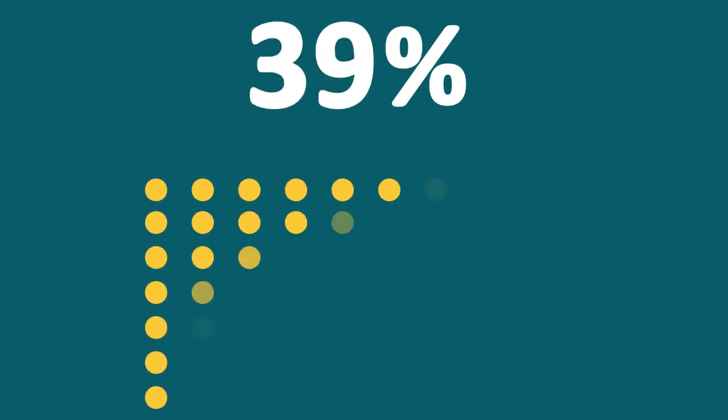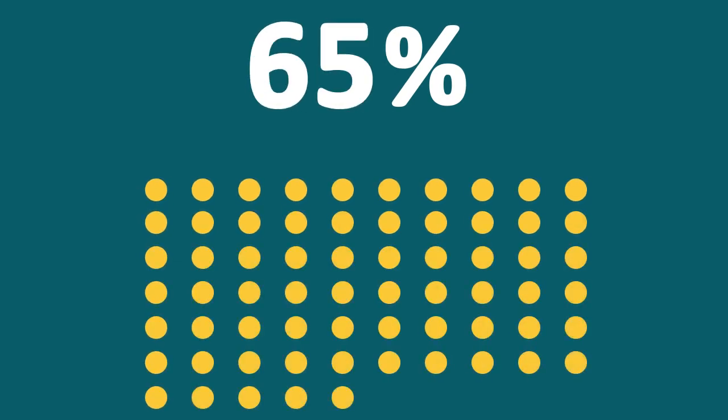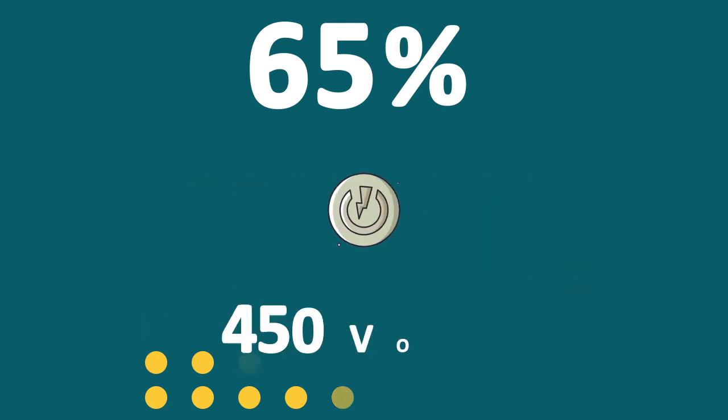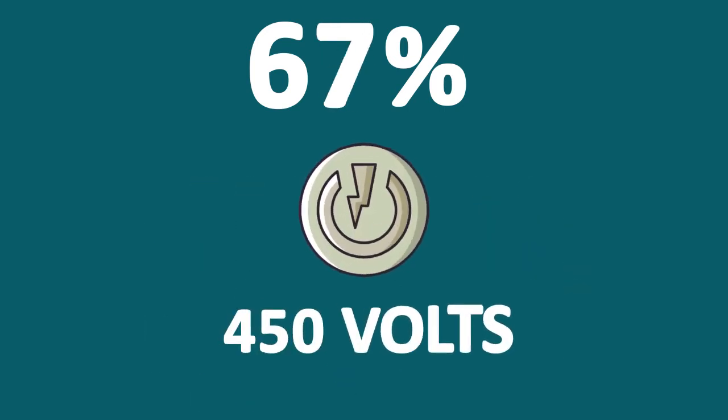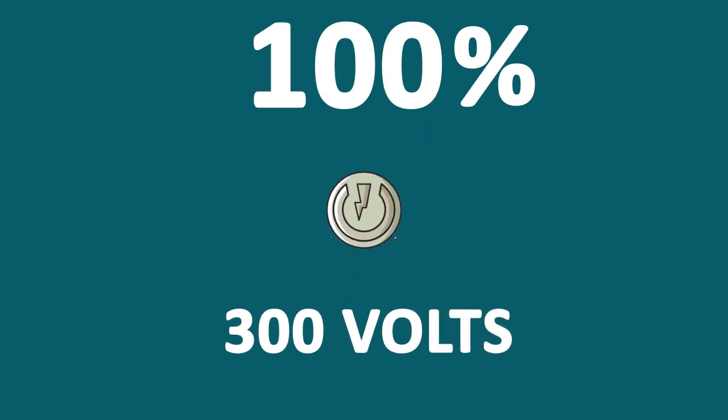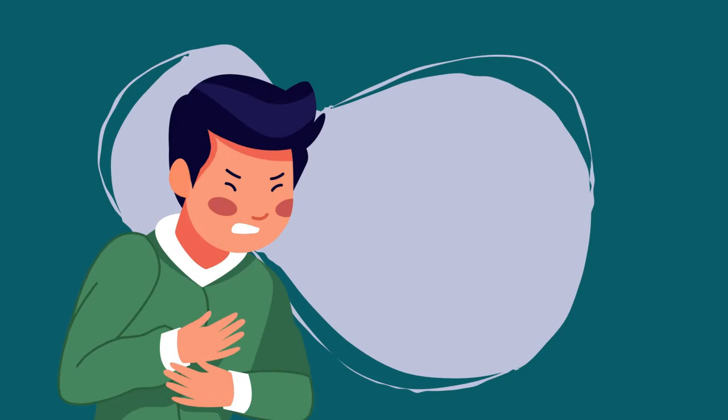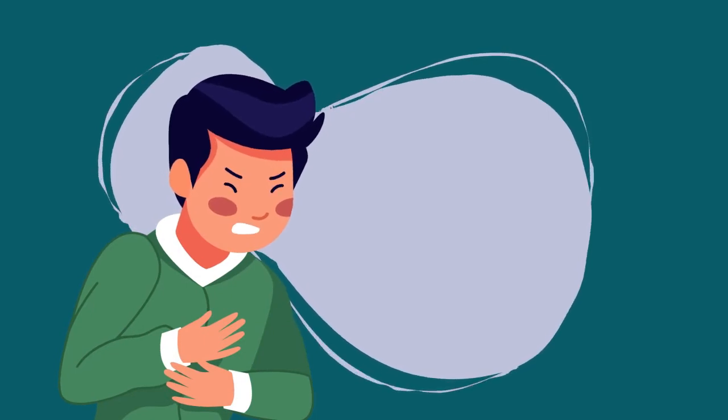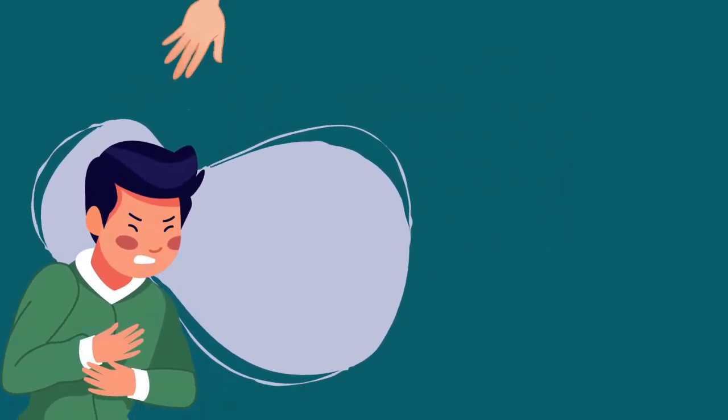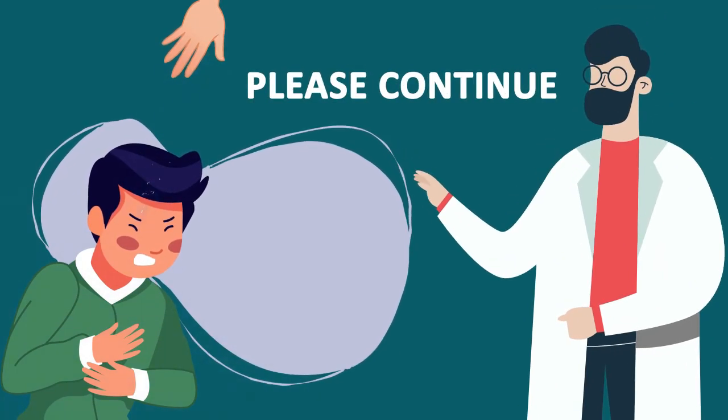65%, or two-thirds of participants, continued to administer shocks up to the highest level of 450 volts. And all the participants continued to at least 300, which is at the point of serious severe pain. Although the subjects heard the student agonizing, they continued when the authority figure would order them to.